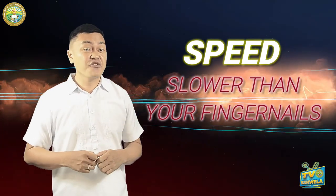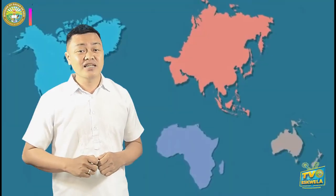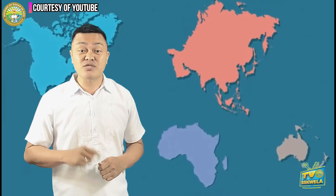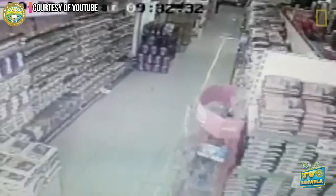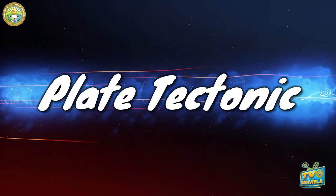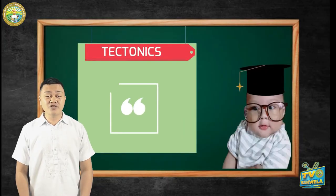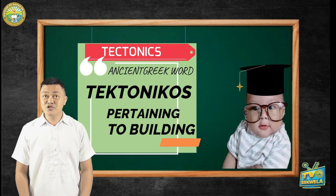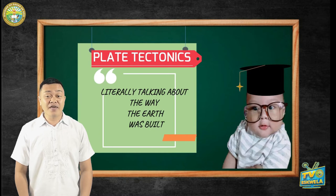Their speed is slower than your fingernails. Even tectonic plates move very slowly. This slow movement creates problems on our planet — it creates earthquakes, volcanoes, mountains, and trenches. The slow movement is caused by plate tectonics. Tectonics is from the ancient Greek word 'tectonicos,' meaning pertaining to building. So when we talk about plate tectonics, it means the way the Earth was built.